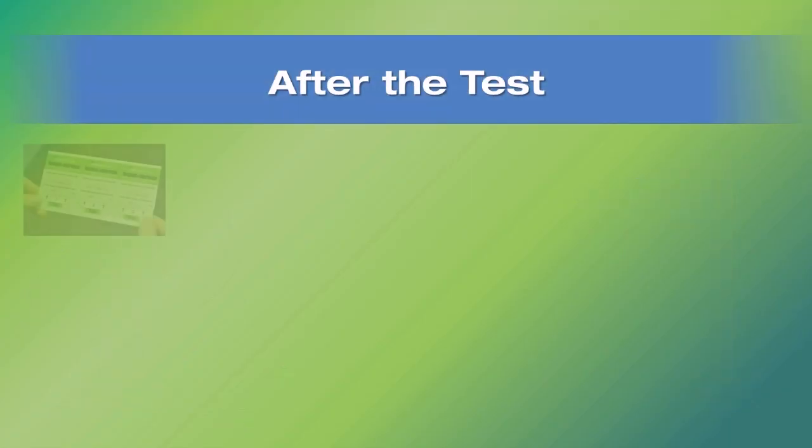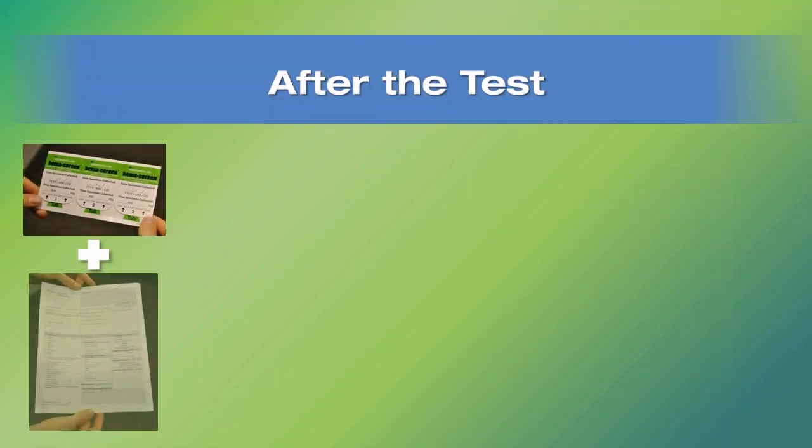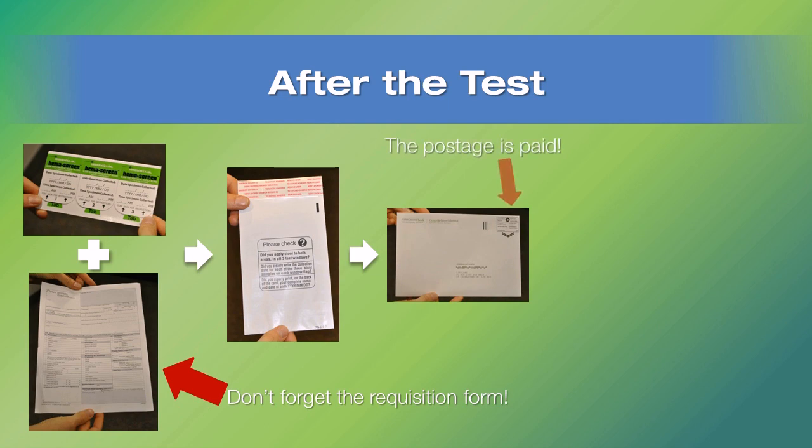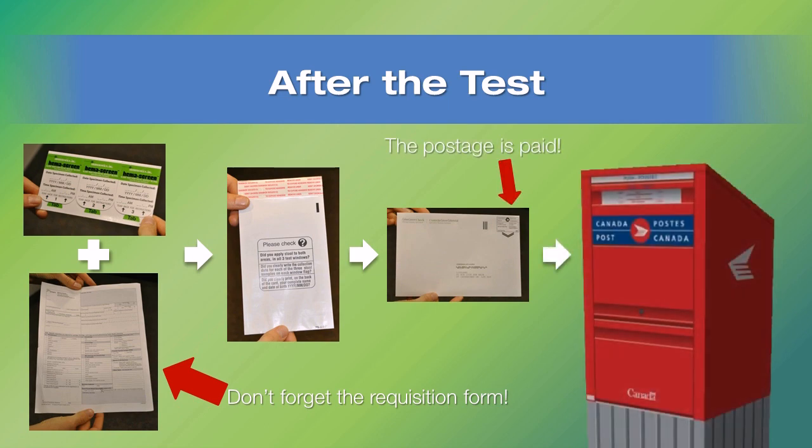After the third sample is collected, place the test card inside the foil-lined envelope, put this smaller envelope and the requisition form into the larger envelope, seal it tightly, and mail it off. The postage is paid. Your family doctor will get the results, and you will also receive a letter from the Colon Cancer Check Program.